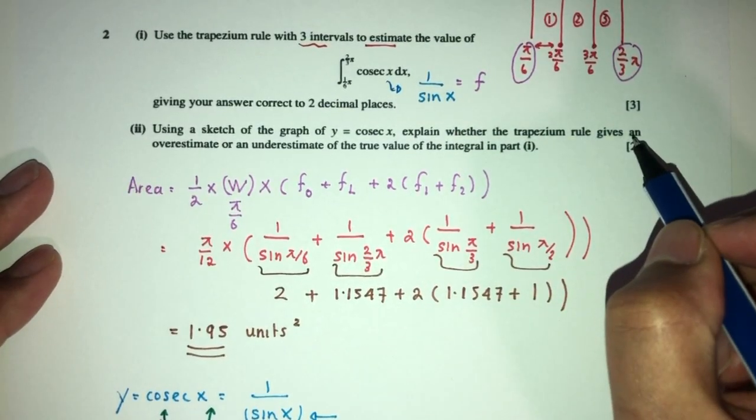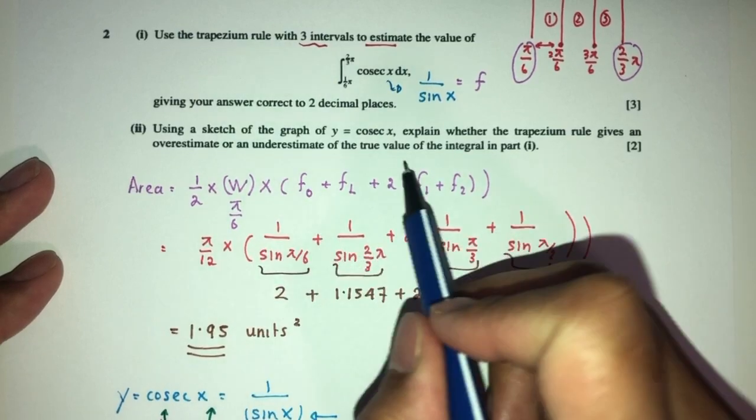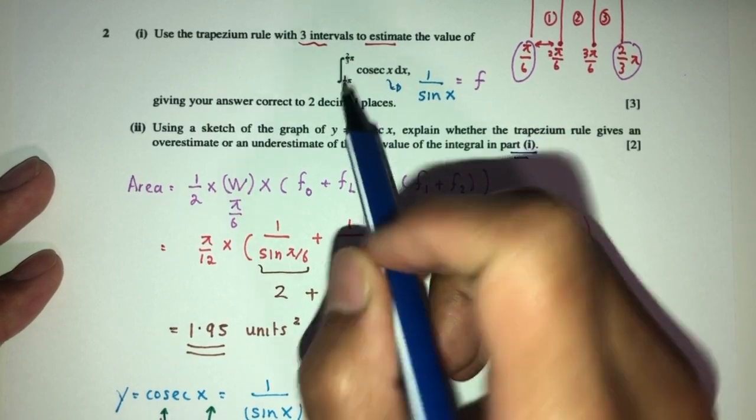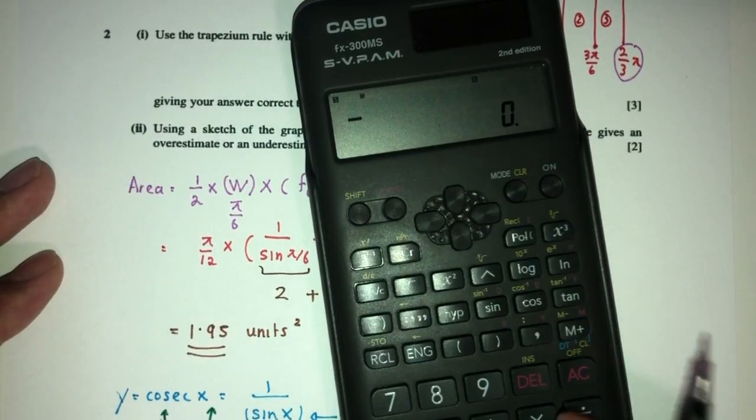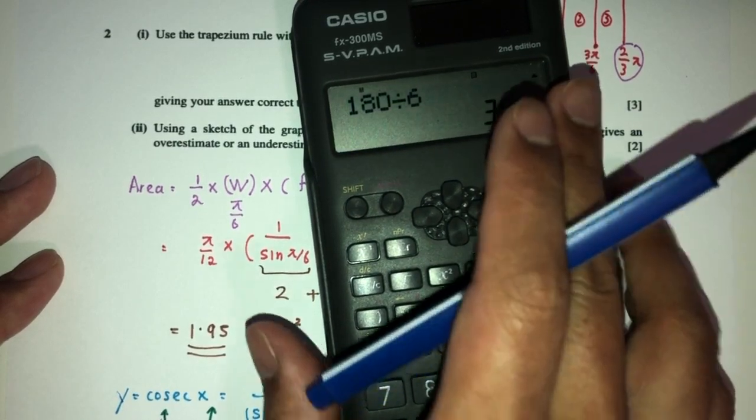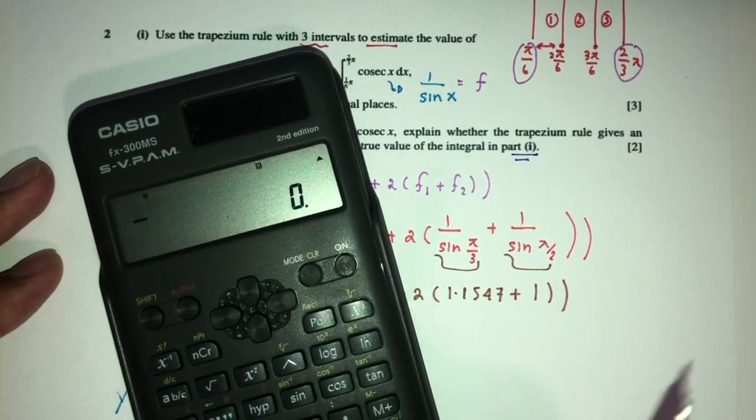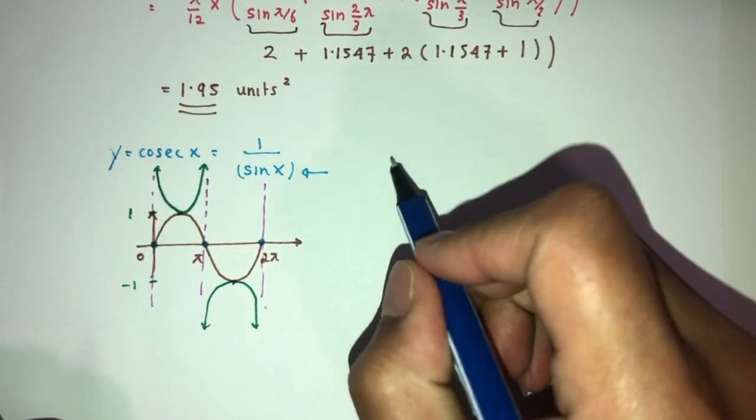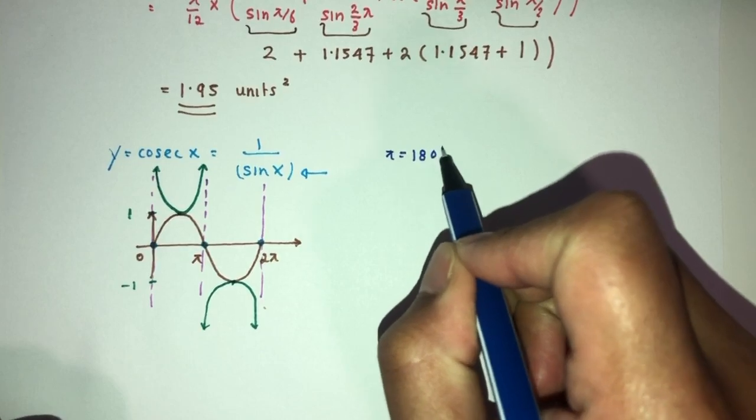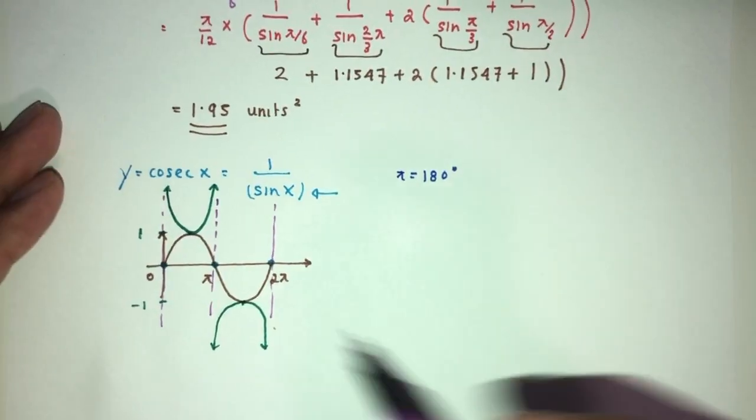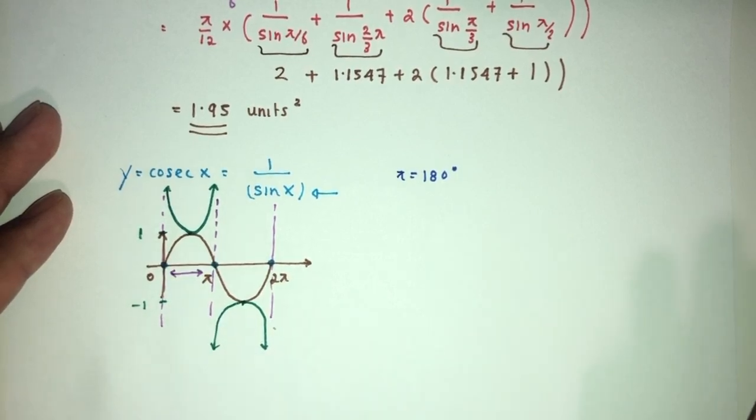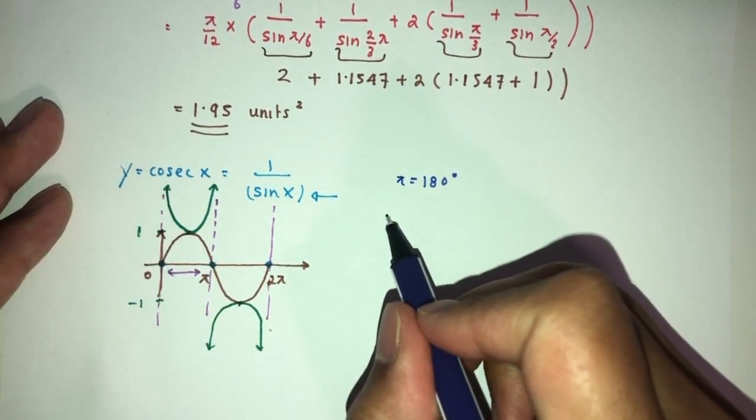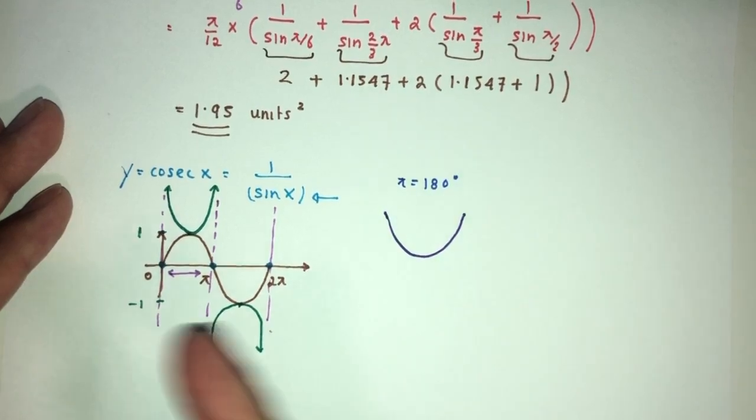Now use the sketch to explain whether the trapezium rule gives an overestimate or underestimate for the true value of the integral in part one. The limits are 2π/3 and π/6. Now π/6 is 180/6, that's 30 degrees. The top limit is 2/3, which is 2 times 180 divided by 3, that's 120. We know that π = 180 degrees. So the area we are trying to find is somewhere over here.